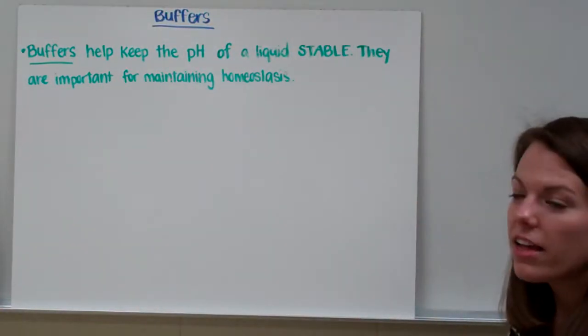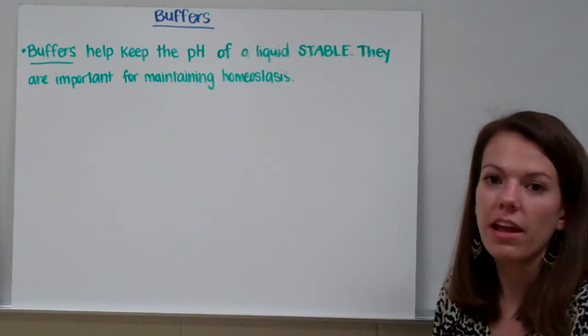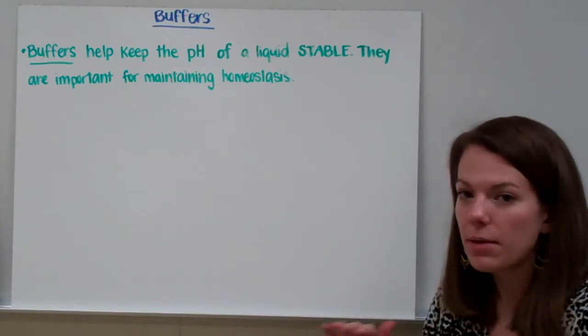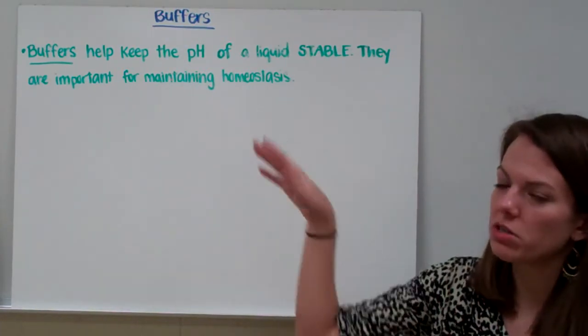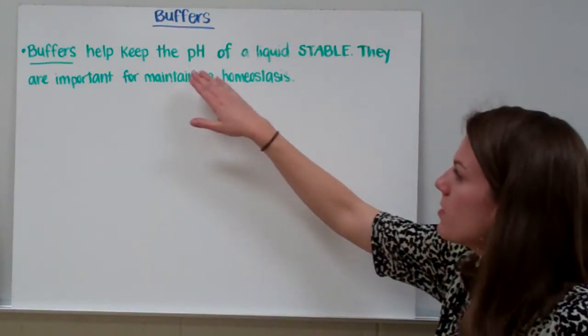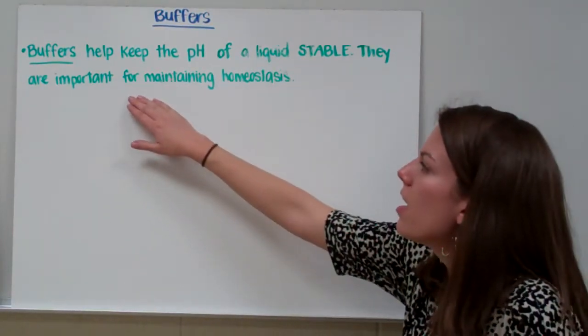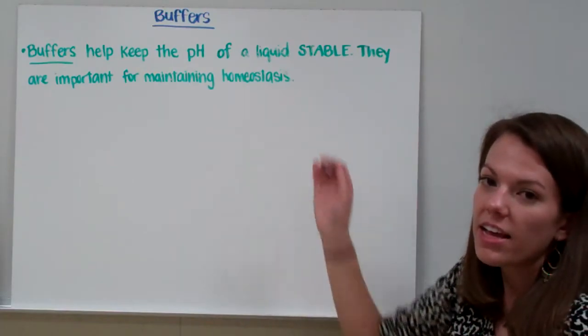Finally, let's take a look at buffers. Remember, our bodies need to maintain homeostasis or a stable state. And that stable state includes a stable pH. We don't want a pH up near 14 or down near 0. We want the pH to stay around 7. And buffers help to keep the pH of a liquid stable, and they are important for maintaining homeostasis or maintaining a stable state.